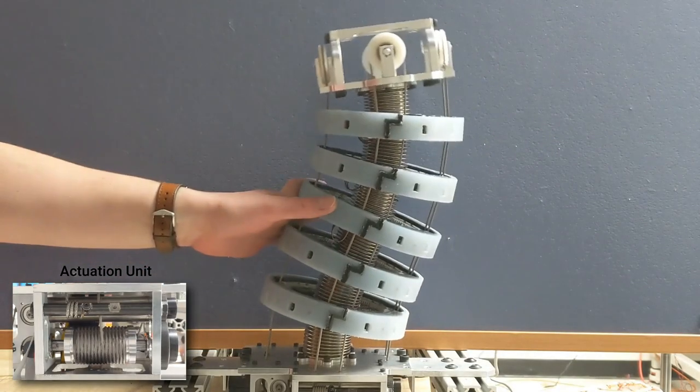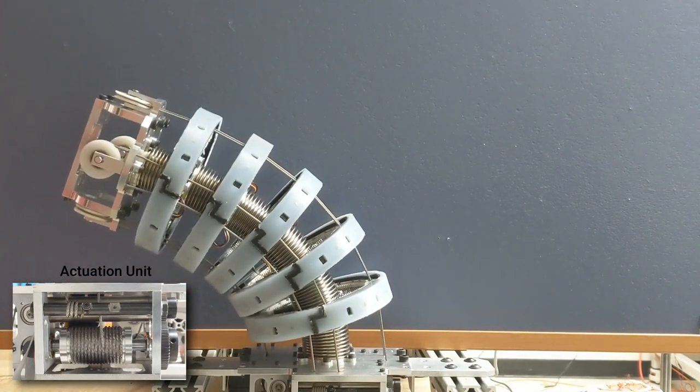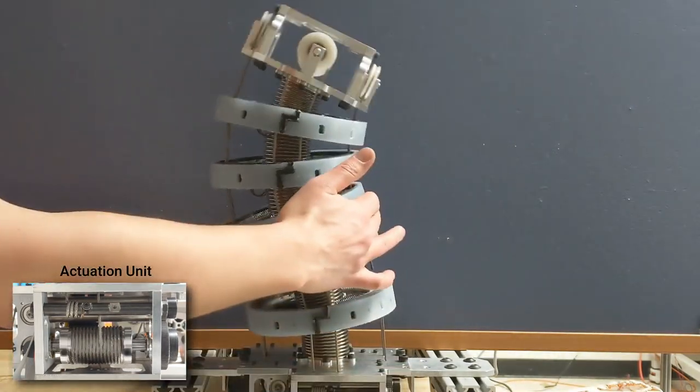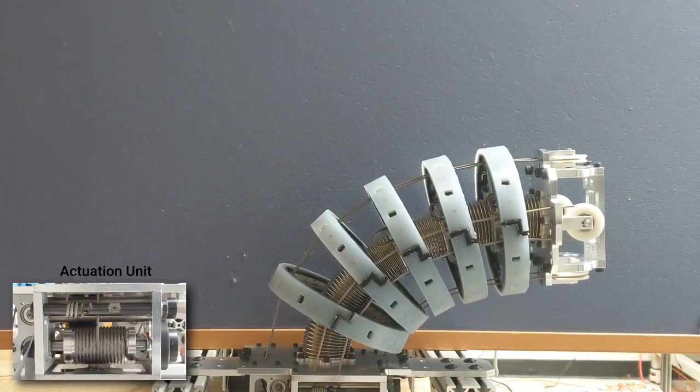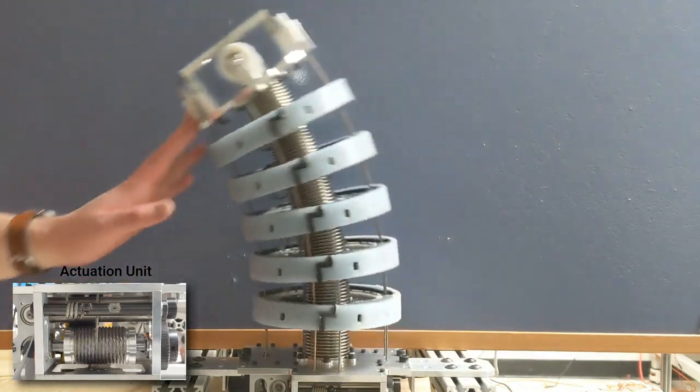Continuum robots experience variable curvature deflections due to their own self-weight and external forces. These deflections introduce uncertainty in the kinematic model of the robot, reducing its performance.